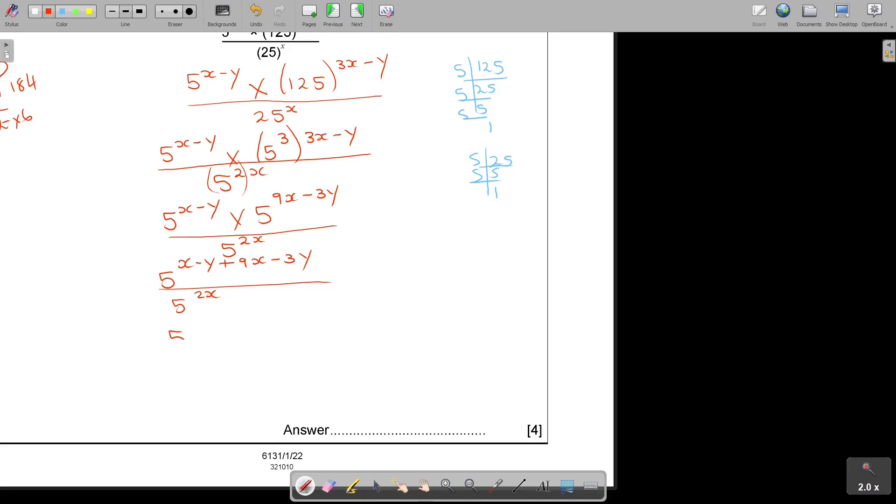And now, I simplify. So, 5. So, X plus 9X. What will that be? That is going to be 10X. And then, -Y-3Y, so this is -4Y. And that's 5^(2X). And then, I'm going to have 5^(10X-4Y). And then, I subtract the 2X. So, I have 5. So, 10 minus 2. And that's 8X-4Y. And my final answer is, and always write it in this space.